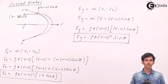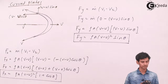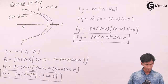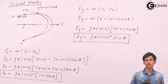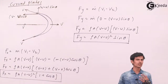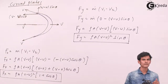The y component of force comes out to ρA(V − U)² sin θ. That was all about the different cases of moving plates. We covered the vertical flat plate moving with velocity U, the inclined flat plate moving with velocity U, and the curved plate moving with velocity U, deriving different formulas for each case.